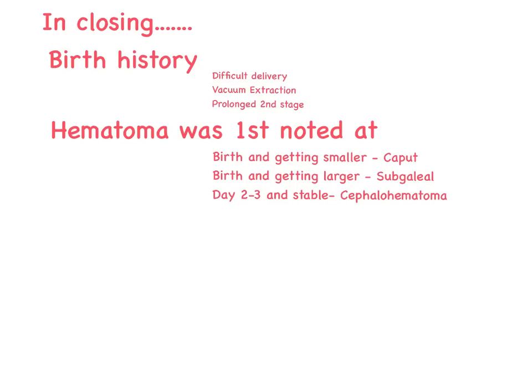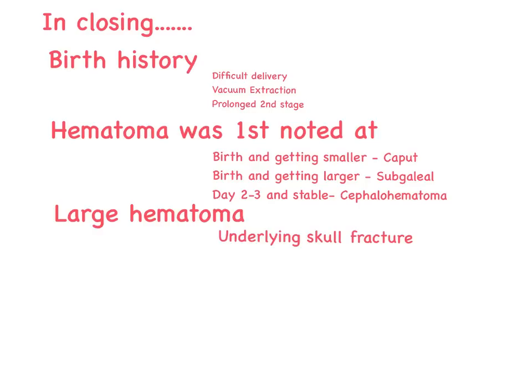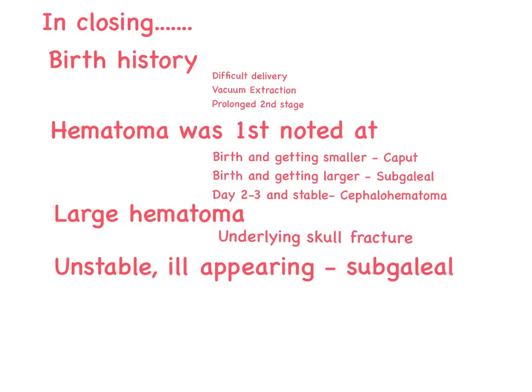If there is a large hematoma, always worry about an underlying skull fracture. Finally, if the child looks unstable and sick, consider a subgaleal hematoma. These neonates will require aggressive resuscitation for hemorrhagic shock, to include ABCs, IV access, type and cross match, CBC, coagulopathy screen, a total indirect bilirubin, electrolytes, skull x-ray, and potentially a CT scan of the head.